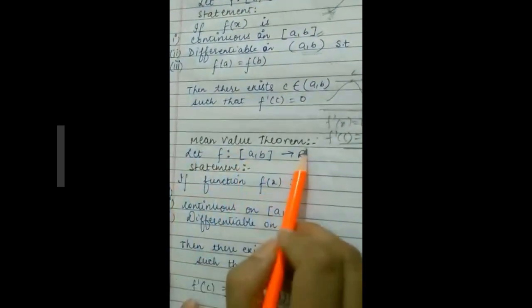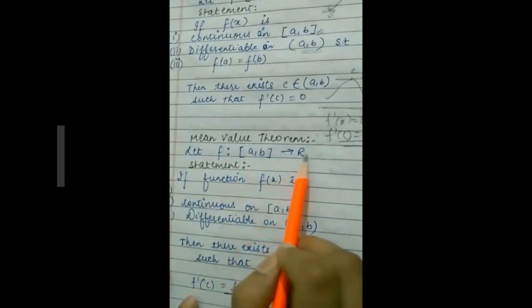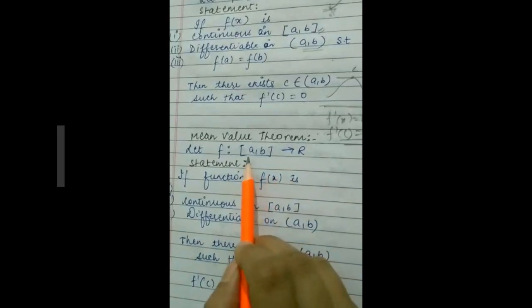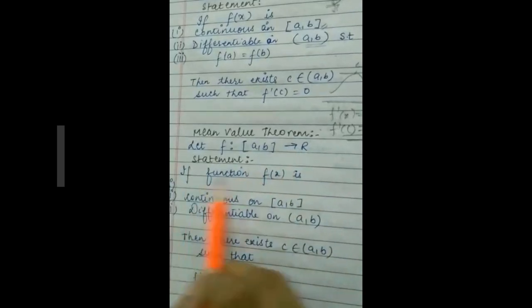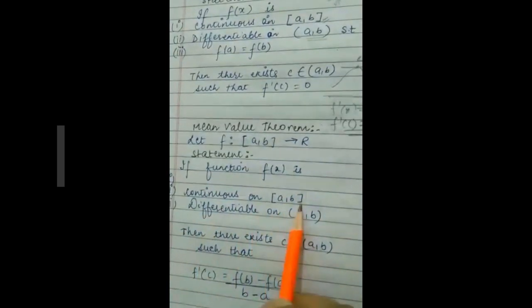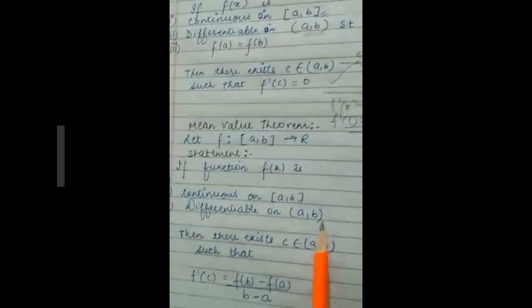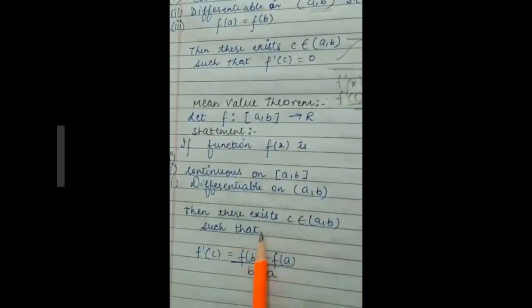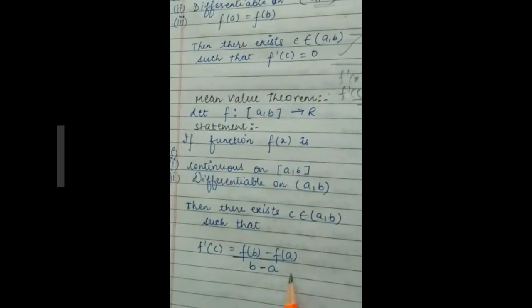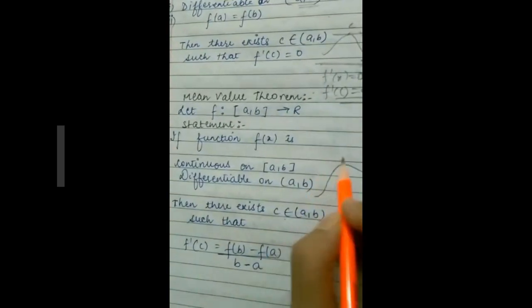Now the Mean Value Theorem: let f be a function from [a, b] to ℝ, with domain [a, b] and range ℝ. The conditions are: f(x) is continuous on the closed interval [a, b] and differentiable on the open interval (a, b). Then there exists c belonging to (a, b) such that f'(c) = f(b) − f(a) / (b − a).